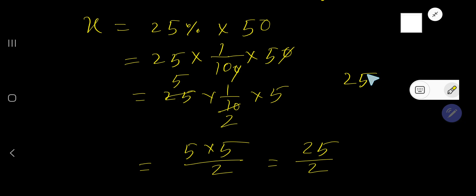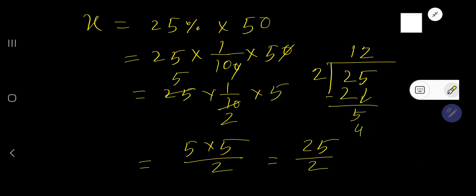So 25 divided by 2: 2 goes into 2 one time. 1 times 2 is 2. Then if you subtract you get 0, bring down this 5. So 2 goes into this 5 two times. 2 times 2 is 4. If you subtract then you will get 1.